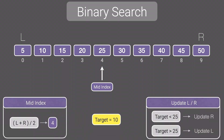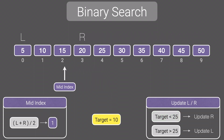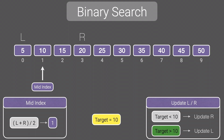We either update L if the value exists to the right of the mid-index, or update R if the value exists to the left of the mid-index. We ask if our target is less than 25. Since 15 is less than 25, we'll update R. We then recalculate our middle index by summing L and R and dividing by 2. So 0 plus 3 divided by 2 is 1.5, which we floor to give us an index of 1. We ask if our target is less than 10 — it's not. We ask if it's greater than 10 — it's not either. So our target must be equal to 10.